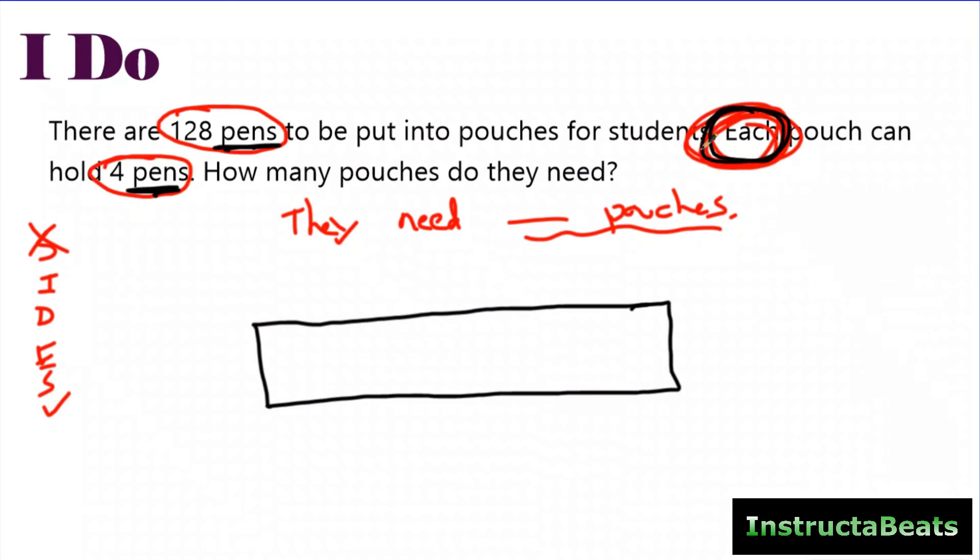Well, right here, it said each pouch can hold 4 pens. So I know that the 4 pens are going to be how much is in each because it told me that. Which means 128 pens is going to be the whole. So I have 4 pens in each, 128 pens, pens and pens. The parts and the whole have to be the same thing, which means I'm missing my groups up here. I have two of the parts filled. I don't have my groups and my groups are going to be the pouches. Each pouch holds 4 pens. Another pouch holds 4 pens. Another pouch holds 4 pens.